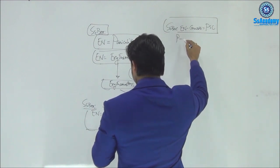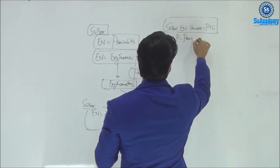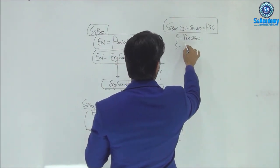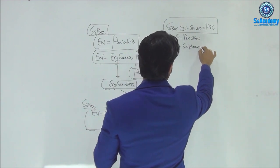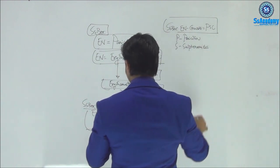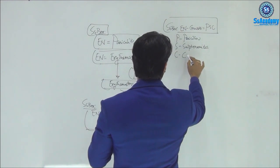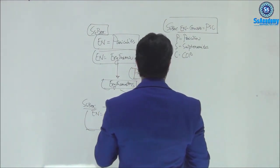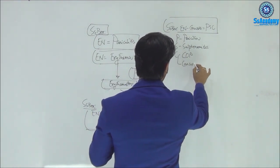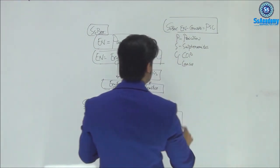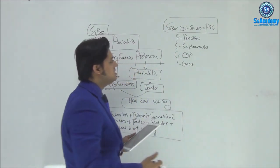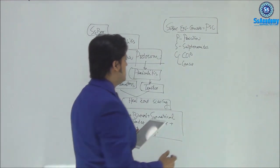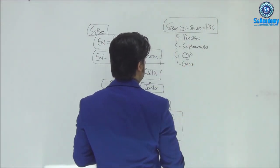P for penicillin, S for sulfonamides, and C for combined oral contraceptive pill. We can write COP. And C also for cancer. So these are three important drugs to remember: penicillin, sulfonamide, and combined oral contraceptive pills, along with cancer.